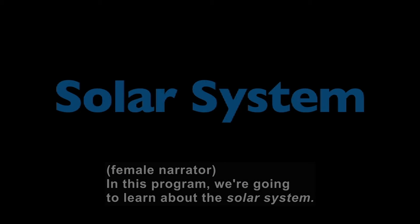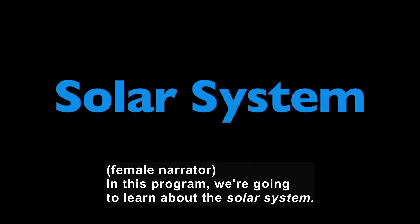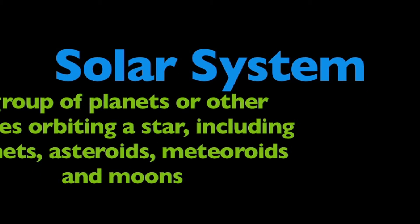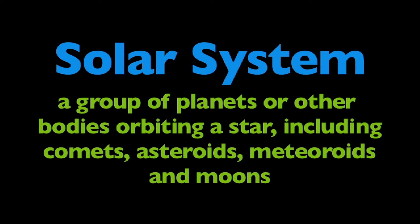In this program, we're going to learn about the solar system. What is the solar system? The solar system is a group of planets, or other bodies, orbiting a star, including comets, asteroids, meteoroids, and moons.